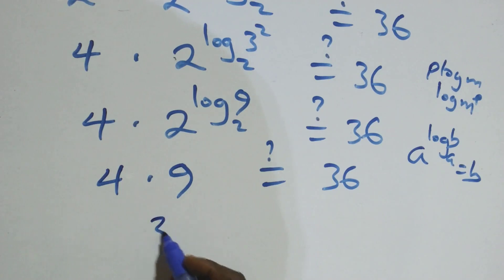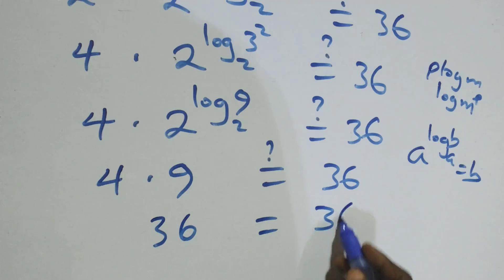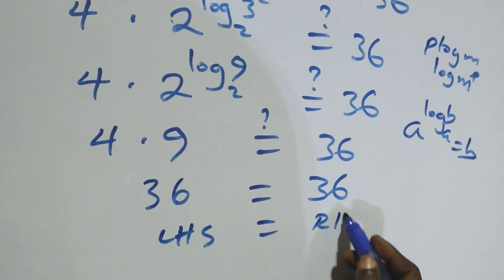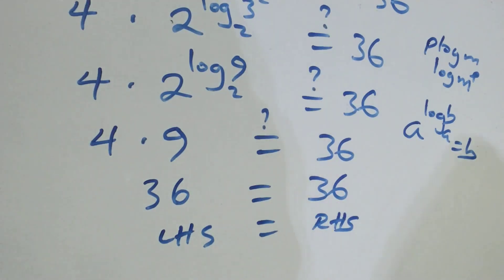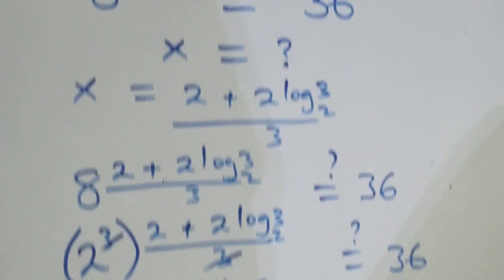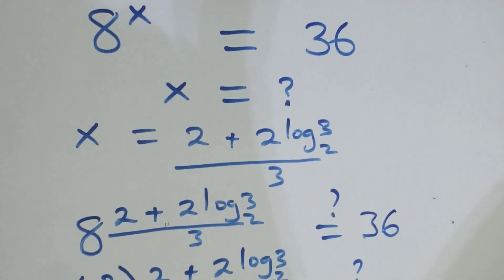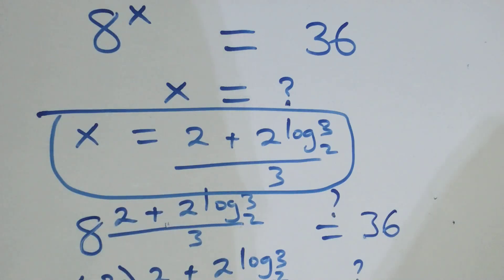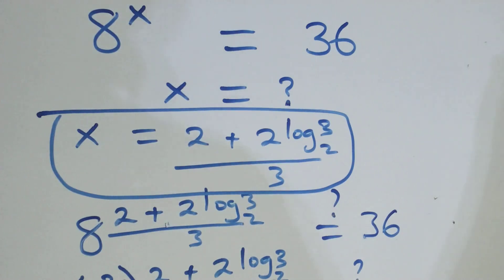4 times 9 gives us 36, equals 36 here, and we have the left-hand side equals the right-hand side. Therefore, we conclude that x equals (2 plus 2 log 3 base 2) all over 3 satisfies the given problem. Thank you for watching — subscribe for more videos, turn the notification bell on, share this video, give it a thumbs up, and put your comments. See you in the next lesson.